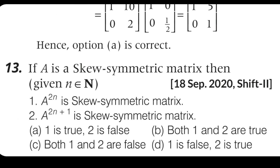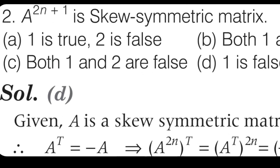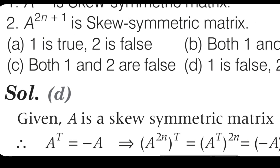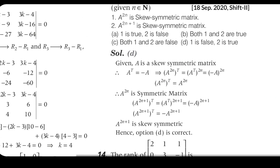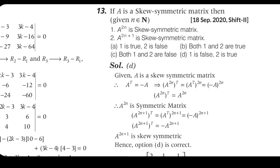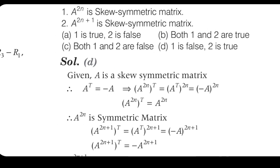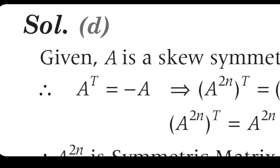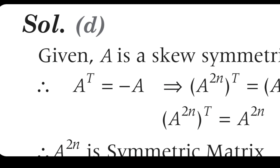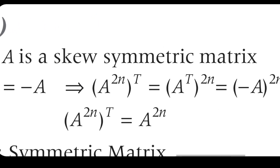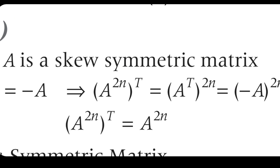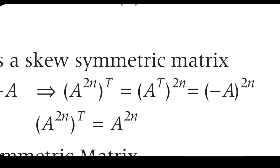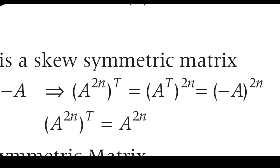So solution D is correct: first condition false, second condition true. The trick: A transpose equals minus A is the skew matrix definition. Raise both sides to power 2n. Even power of negative gives positive — so A to the power 2n is NOT skew. Odd power stays negative — so A to the power 2n+1 IS skew.